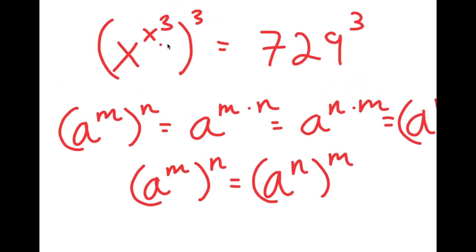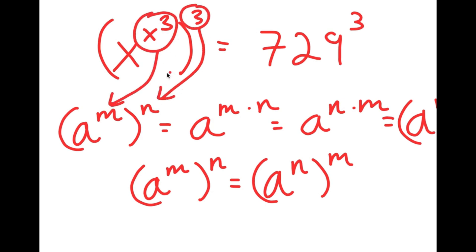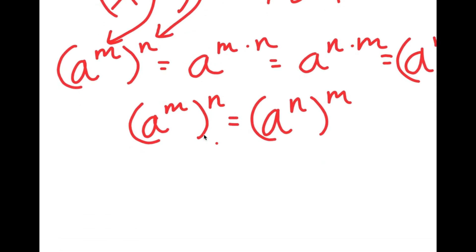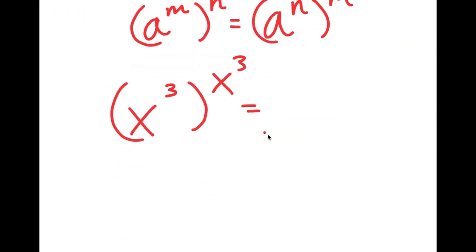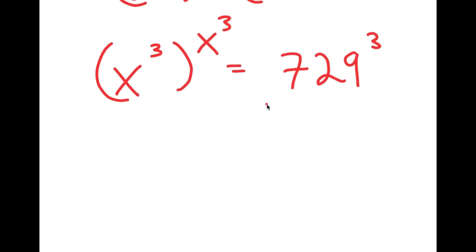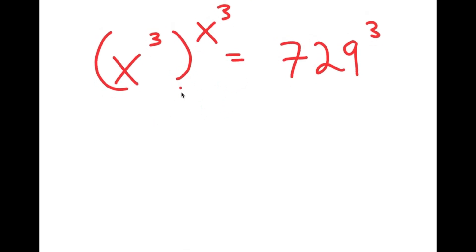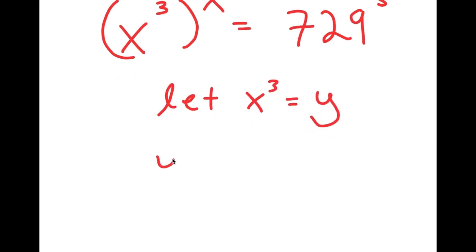So I have x to the power of x to the power of 3 to the power of 3. Thinking of x to the power of 3 as m and 3 as n and switching their places, I get x to the power of 3 to the power of x to the power of 3, which equals 729 to the power of 3. Now I'm going to let x to the power of 3 equal to the variable y, so I get y to the power of y equals 729 to the power of 3.